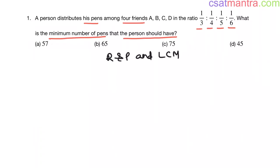These ratios are in fractions. I want to convert them into integers because we want to have a number of pens, and number of pens are integers. To convert them into integers, I am multiplying them with the LCM of all these denominators.